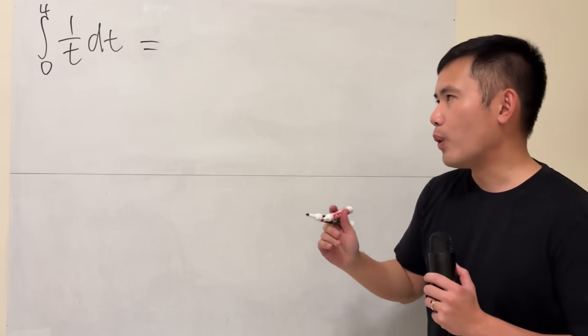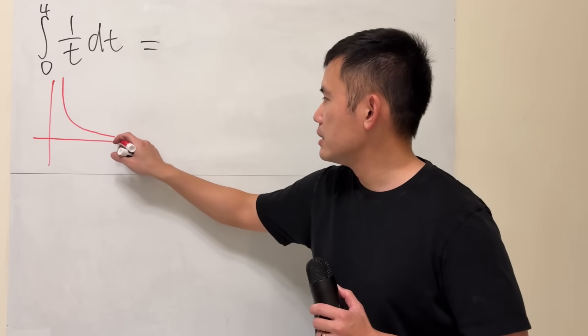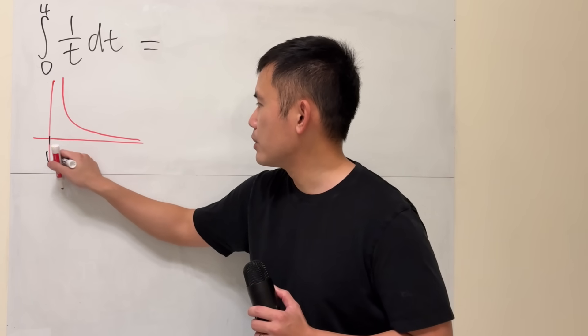So let me give you the graph for 1 over t first. And we just care about the first quadrant because we just want from 0 to 4.